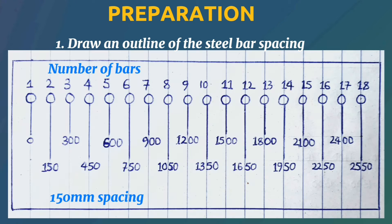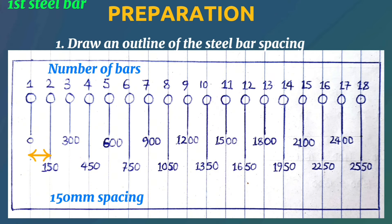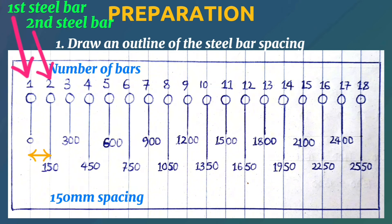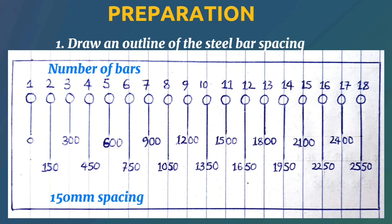The first step is to draw an outline of the steel bar spacing, and this is how it's done. For example, if you intend to use a spacing of 150 millimeters from one steel bar to another, center to center, you first draw a guide. This is a steel bar and the spacing in between is 150 millimeters. Therefore, the first steel bar is at the zero mark, the second at 150 millimeters, third at 300 millimeters, fourth at 450 millimeters, fifth at 600 millimeters, keeping the spacing at 150 millimeters.